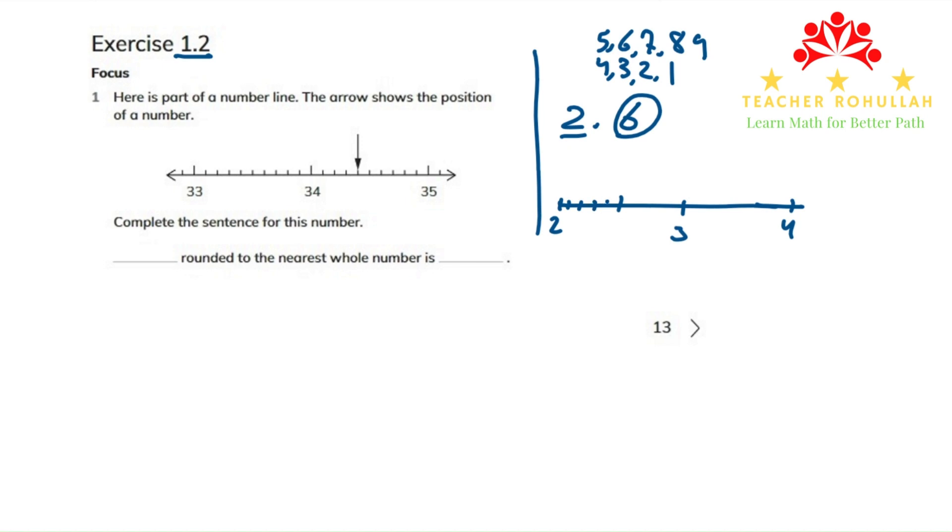The distance between 2 and 3 is split into 10 equal points: 1, 2, 3, 4, 5... 1, 2, 3, 4, 5. 2.6 is right here. This point is 2.6.